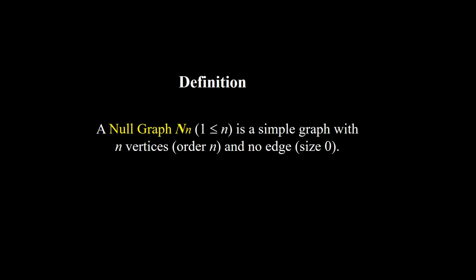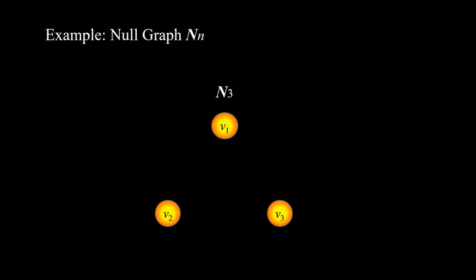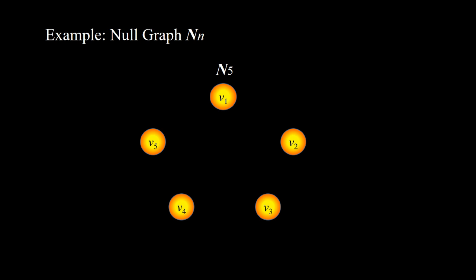A null graph, denoted by Nn where n starts from 1, is a simple graph with n vertices — so the order is n — and no edges, so the size is 0. For example, N1 has one vertex and no edge; N2 has order 2 but no edge; N3 has order 3 and size 0; N4 has order 4 and size 0; and N5 has 5 vertices and no edge.